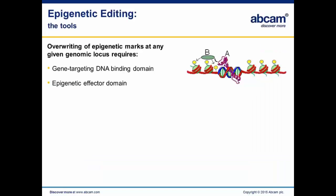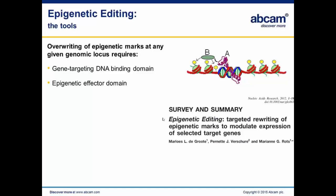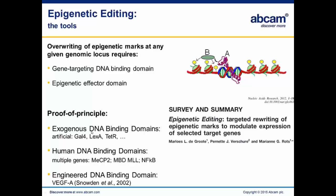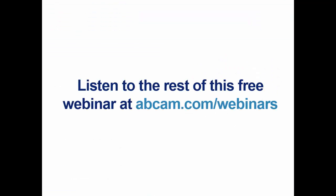The tools for epigenetic editing minimally require a gene-targeting DNA binding domain fused to an epigenetic effector domain. We have a long list of epigenetic effector domains which have been validated to indeed write or erase epigenetic marks, as we reviewed in 2012. The majority of these studies made use of exogenous DNA binding domains, requiring reporter plasmids or integrated transgene constructs to determine the effect. Alternatively, people made use of human or mammalian DNA binding domains like MECP2 or NF-κB, but these bind multiple genes. At that time, there was only one research group that made use of engineered DNA binding domains to target their gene of interest, VEGFA.